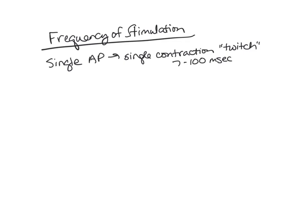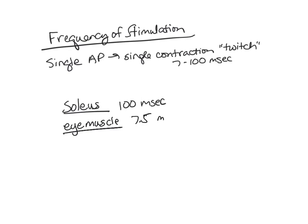The duration of twitches is going to depend on what type of muscle it is. For example, the soleus muscle in the calf — that twitch will last about 100 milliseconds. But one of your eye muscles — a twitch in the eye muscle might only last 7.5 milliseconds. We'll take a look at the gastrocnemius because the gastrocnemius is somewhere between those two. The gastrocnemius is the large calf muscle.